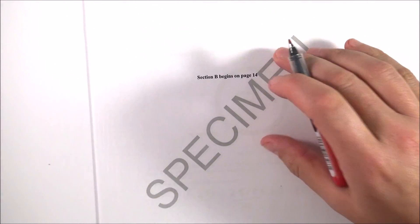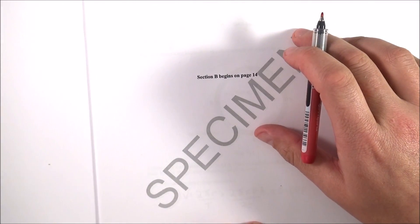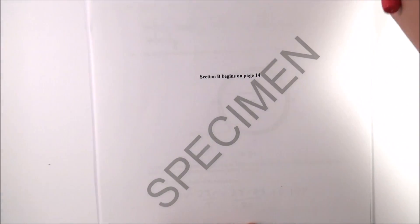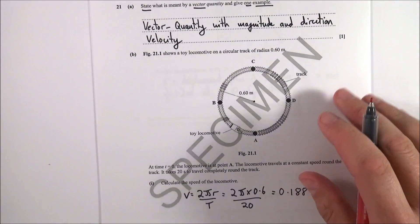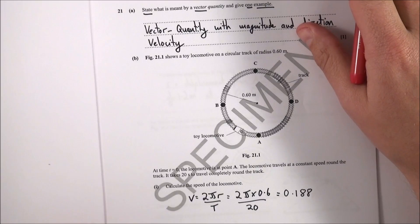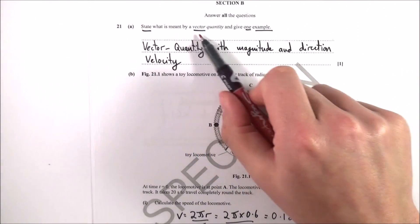After the multiple choice section we now go on to Section B which is the longer answer questions. First of all, question 21, this question comes up in so many past papers. State what is meant by a vector quantity and give one example.